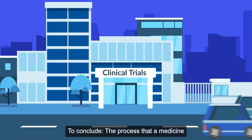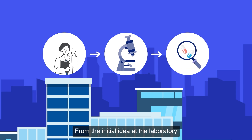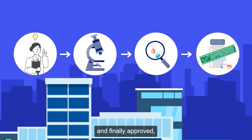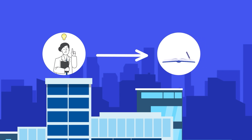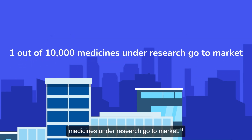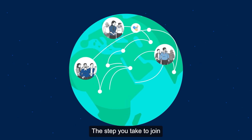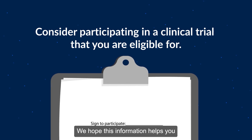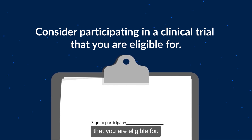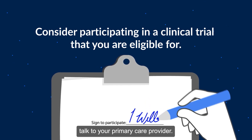To conclude, the process that a medicine or treatment follows until it gets to our homes is rigorous and long. From the initial idea at the laboratory until the medicine is tested and finally approved, more than 12 years may go by, and many ideas get dropped along the way. Only one out of 10,000 medicines under research goes to market. Without research, there would be no scientific improvements or new medicines. The step you take to join a clinical trial will help people and scientists all over the world. We hope this information helps you consider participating in a clinical trial that you are eligible for. If you have any additional questions about clinical trials or participating in one, talk to your primary care provider.